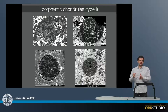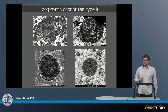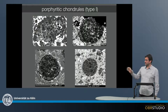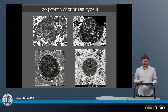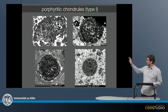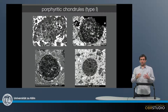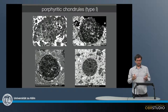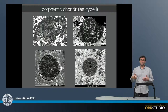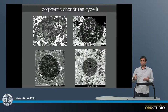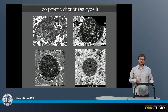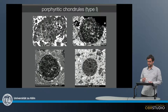We typically look at chondrules in backscattered electron images, as chondrules are quite small, and here we get higher resolution and more details. These here are all porphyritic chondrules, and porphyritic chondrules are the most abundant type — maybe 80–90 volume percent of all chondrules are in fact porphyritic chondrules.